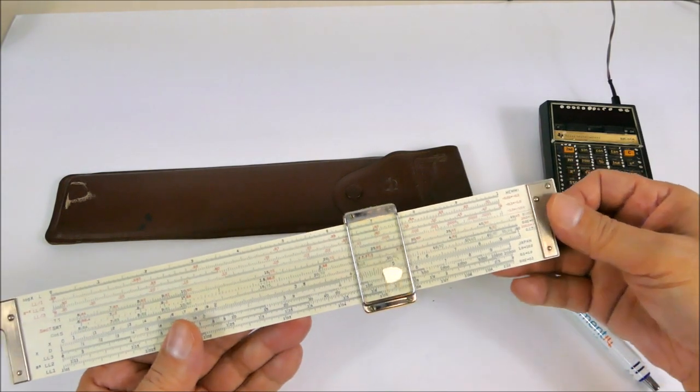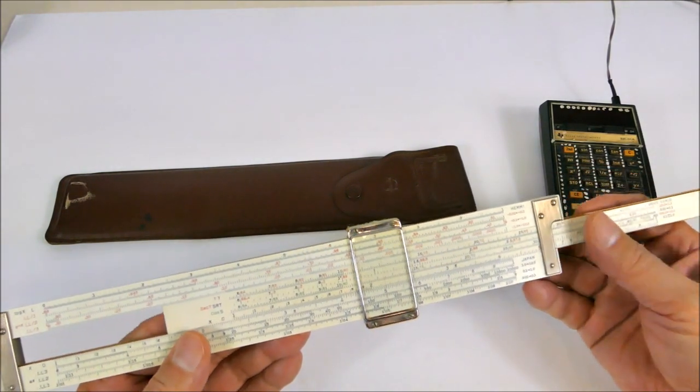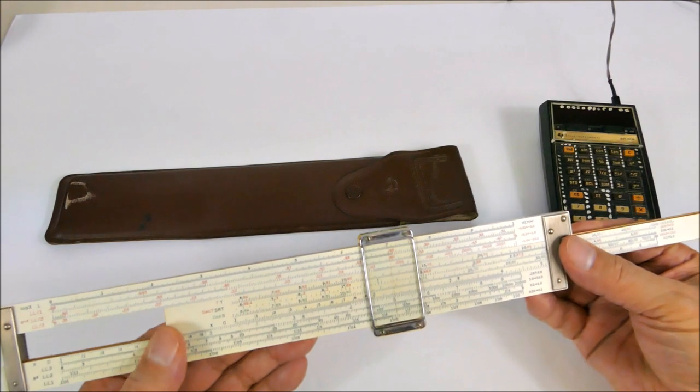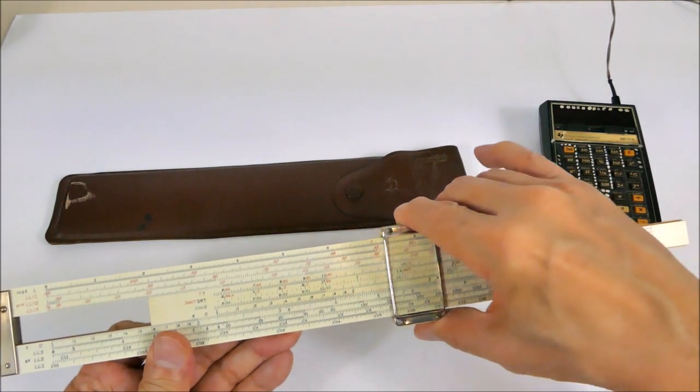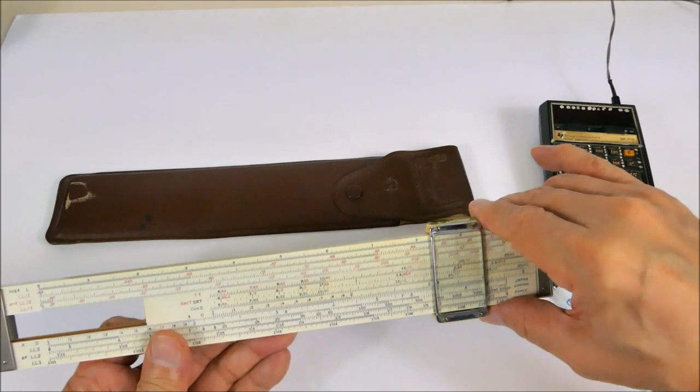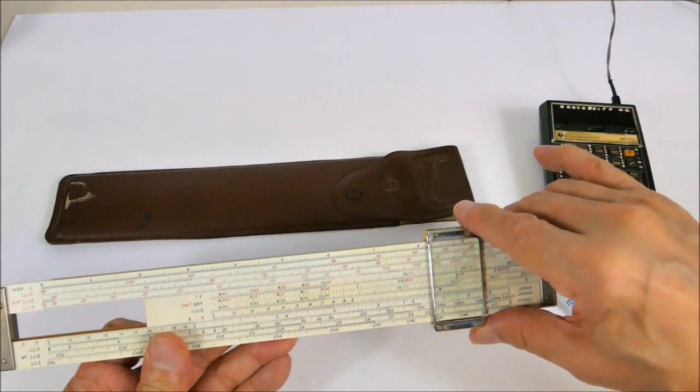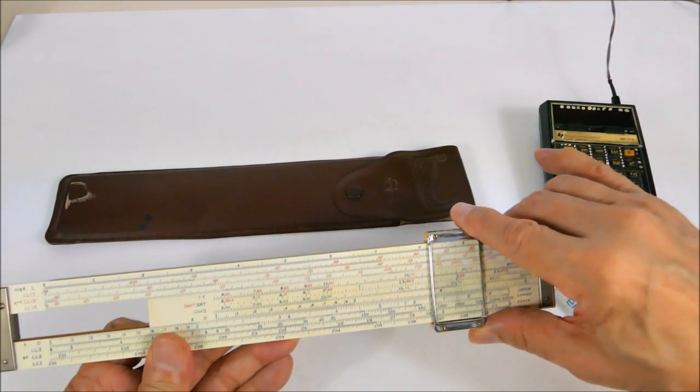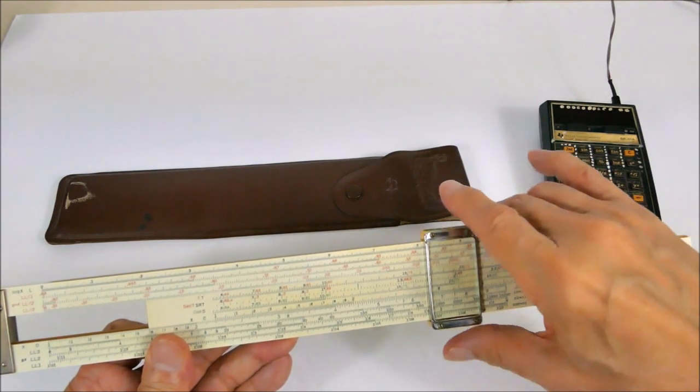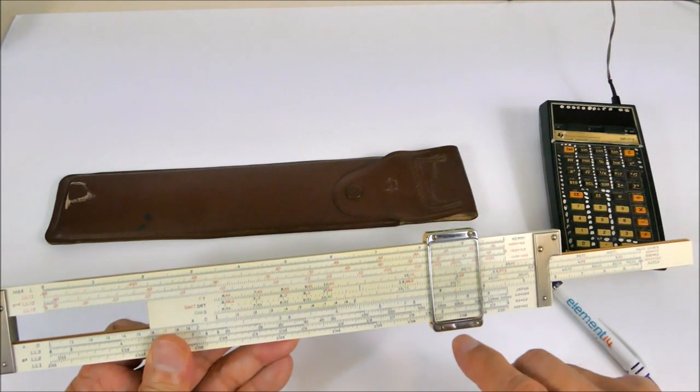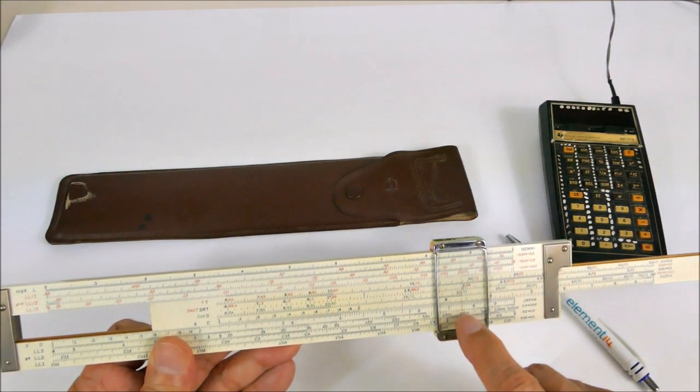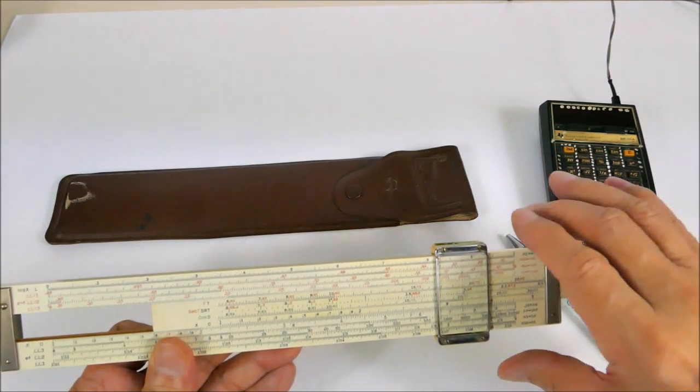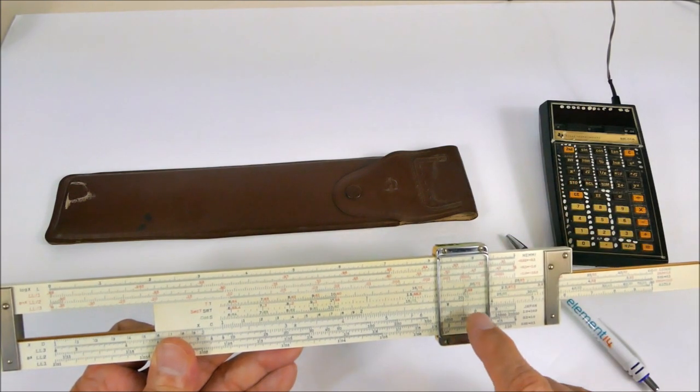If we want to do something like multiply 22 times cosine of 70, so we go to 22, and then we just slide this over to 70 degrees on the cosine scale right there, and we can read that off as seven point five two.